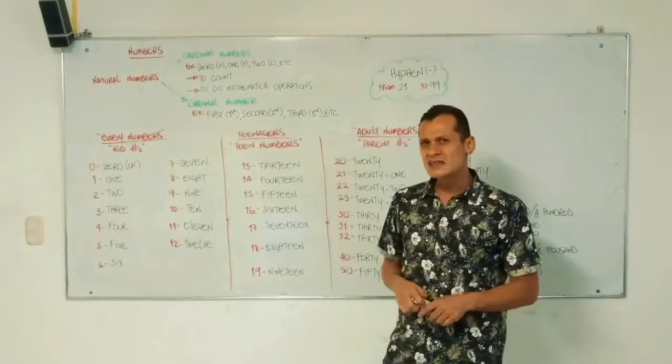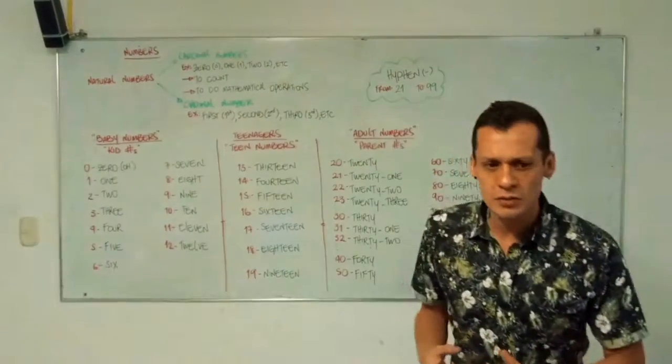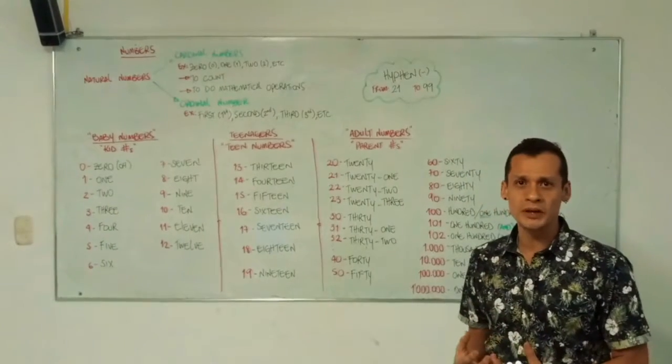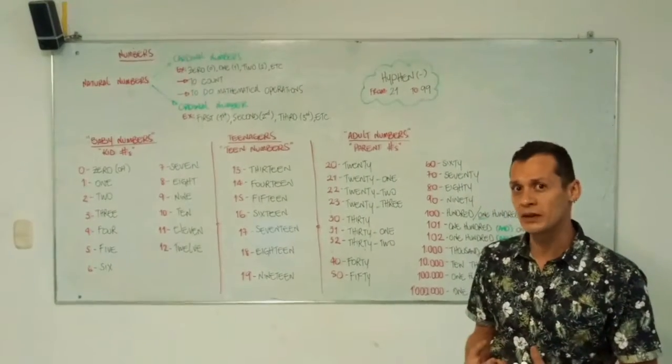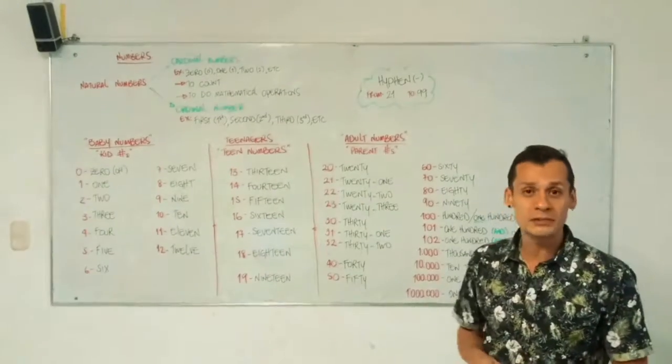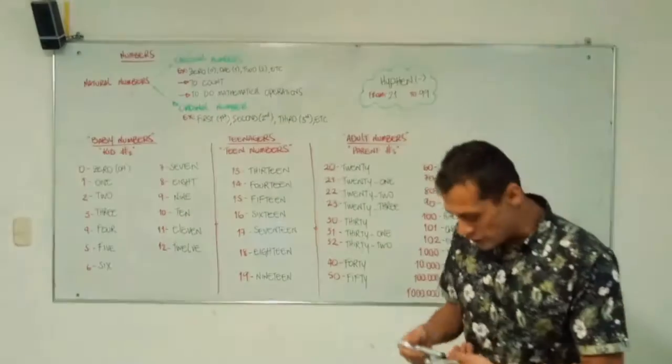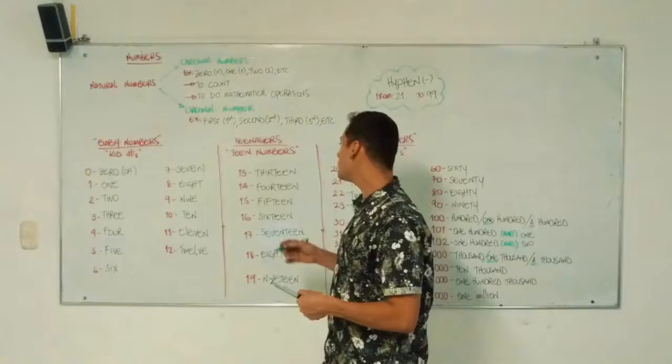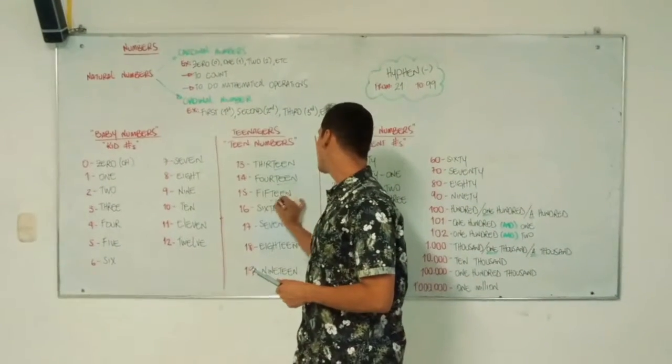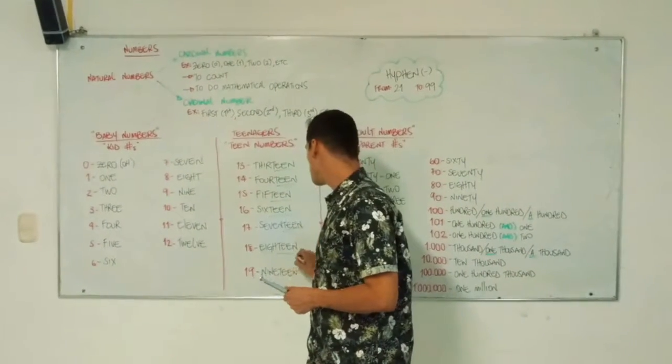Now, teen numbers. Teenagers, they feel like they need to belong to a group. They need to feel identified in something, and they usually follow patterns. The same with numbers, they all follow the pattern of teen. So as you can see, all of the numbers are going to be identified because of the same ending.